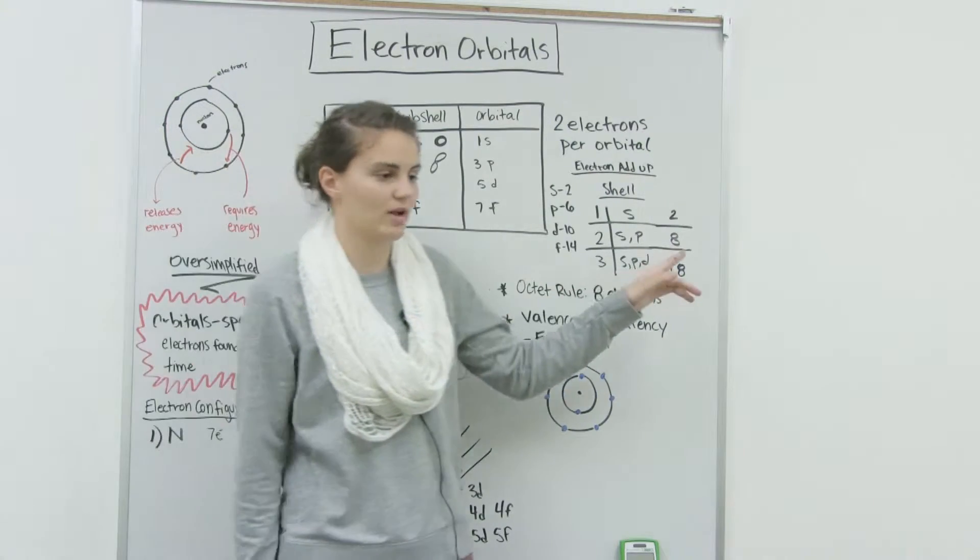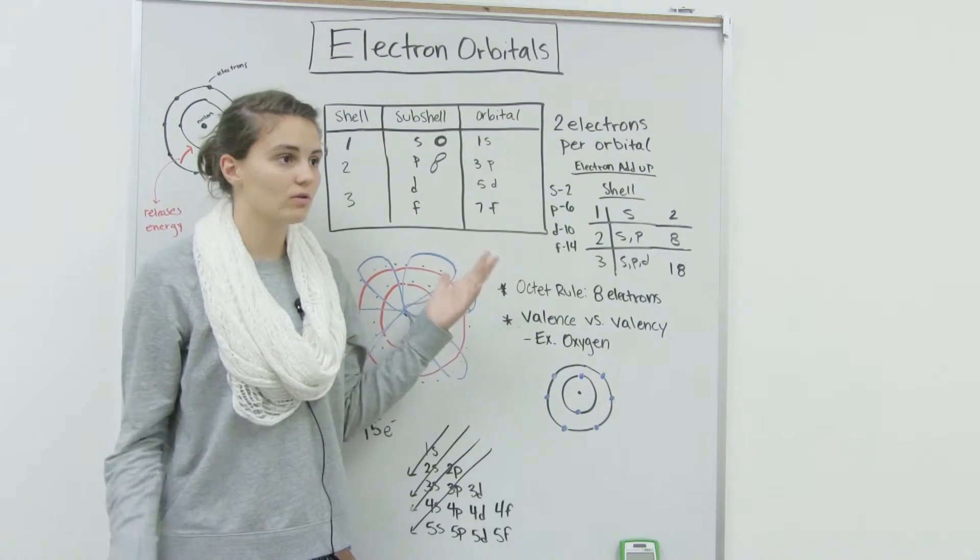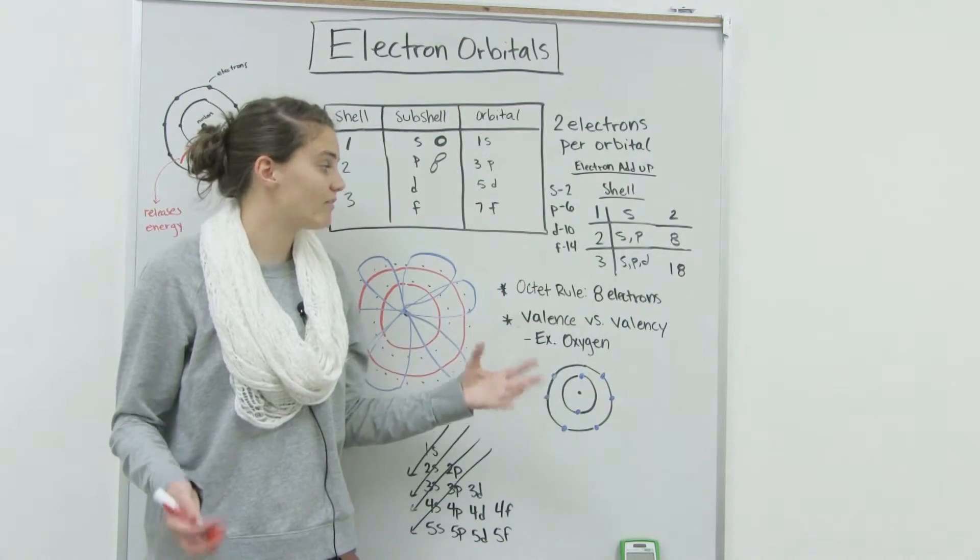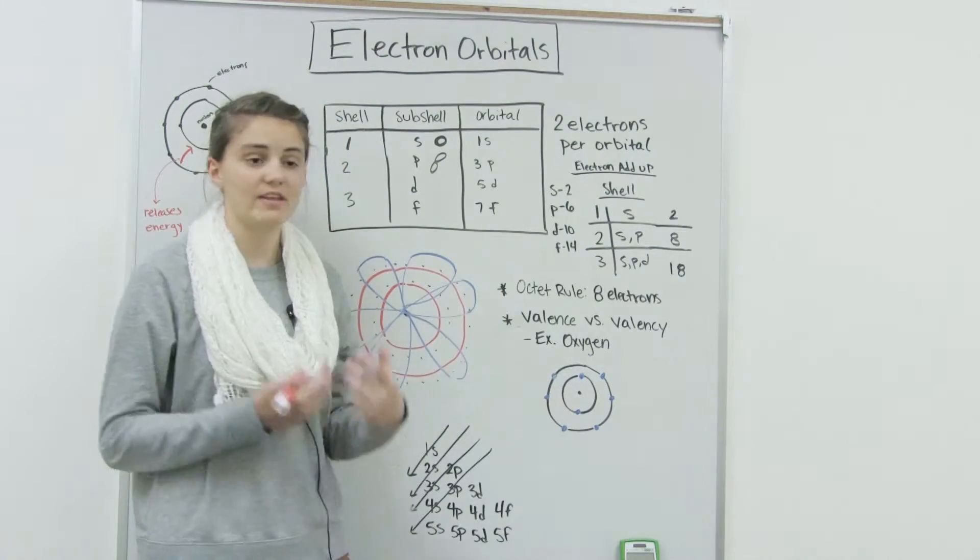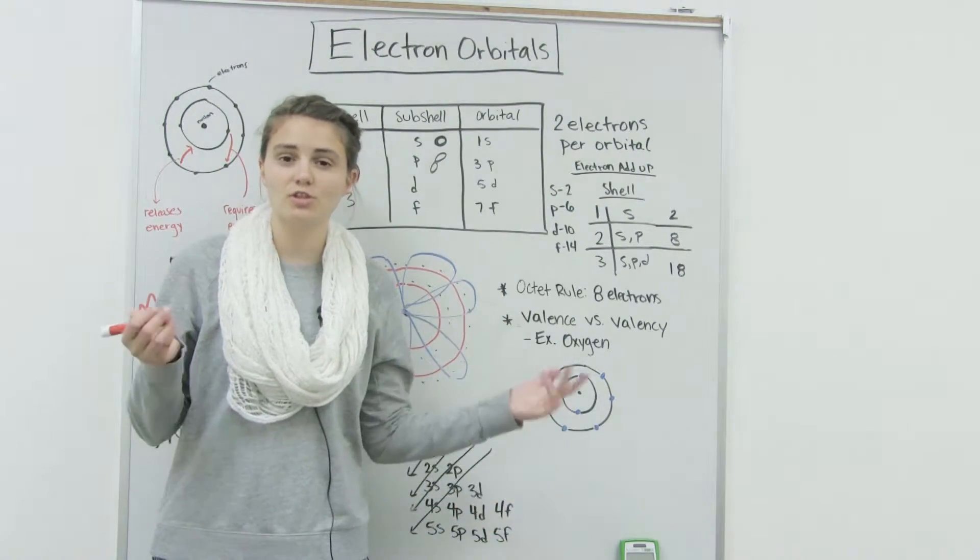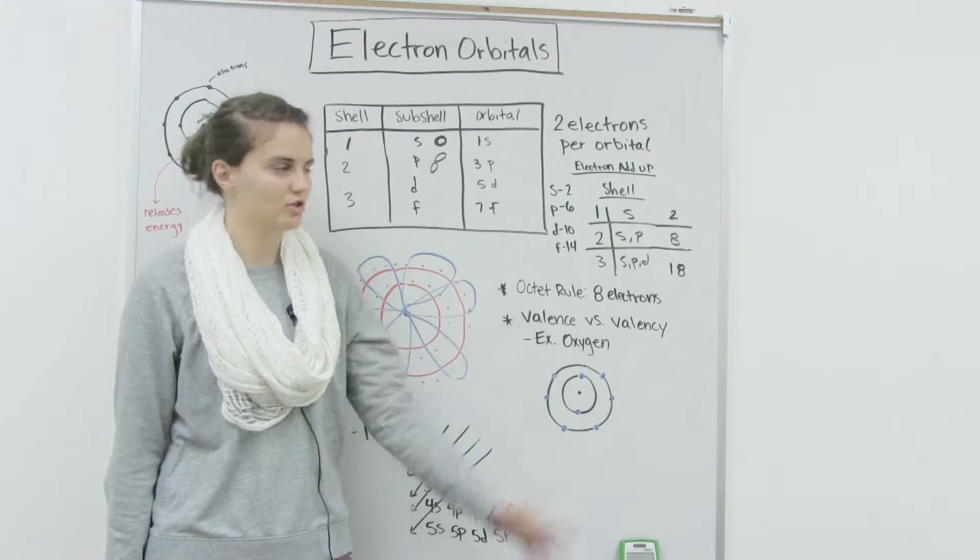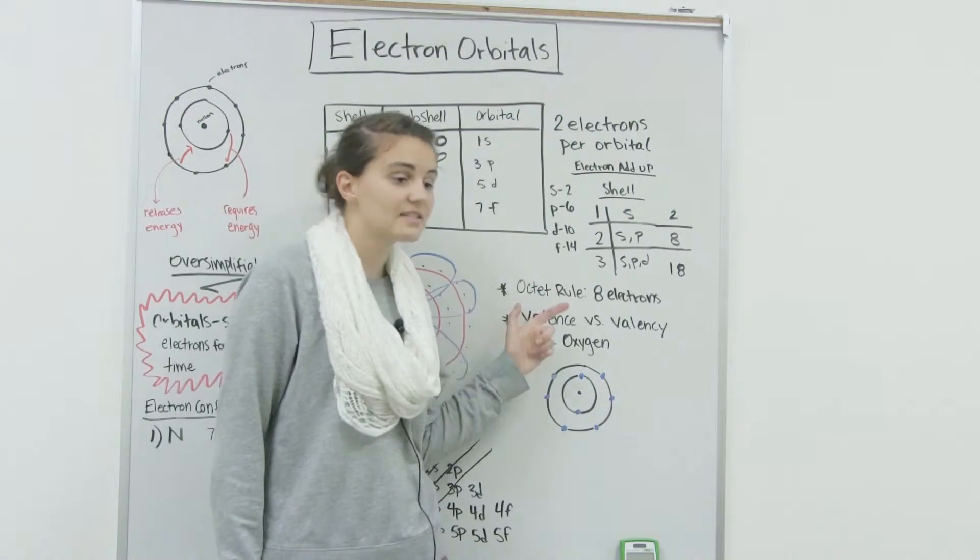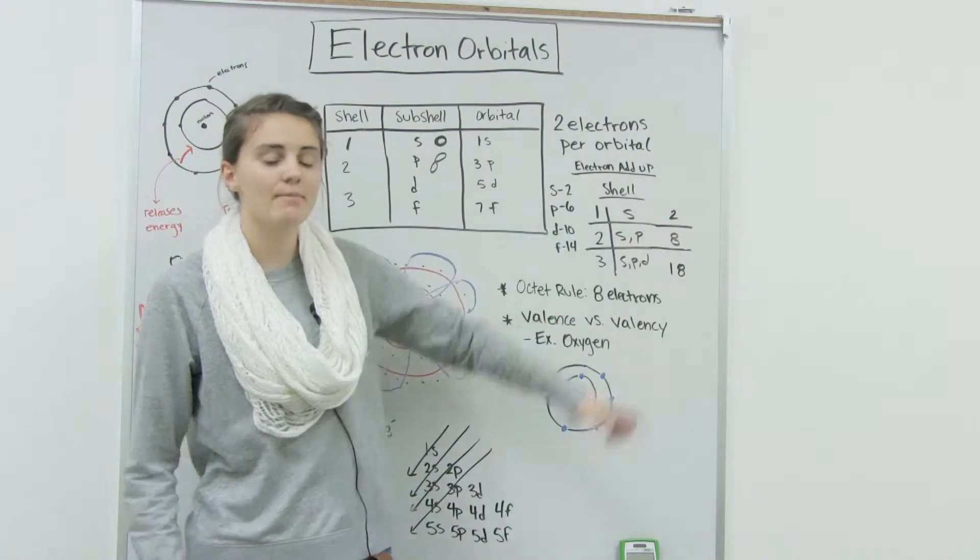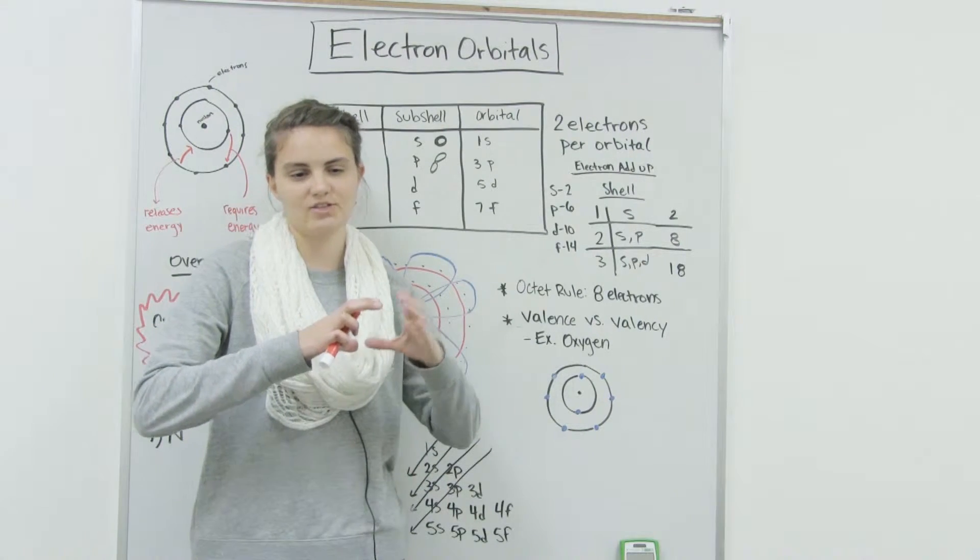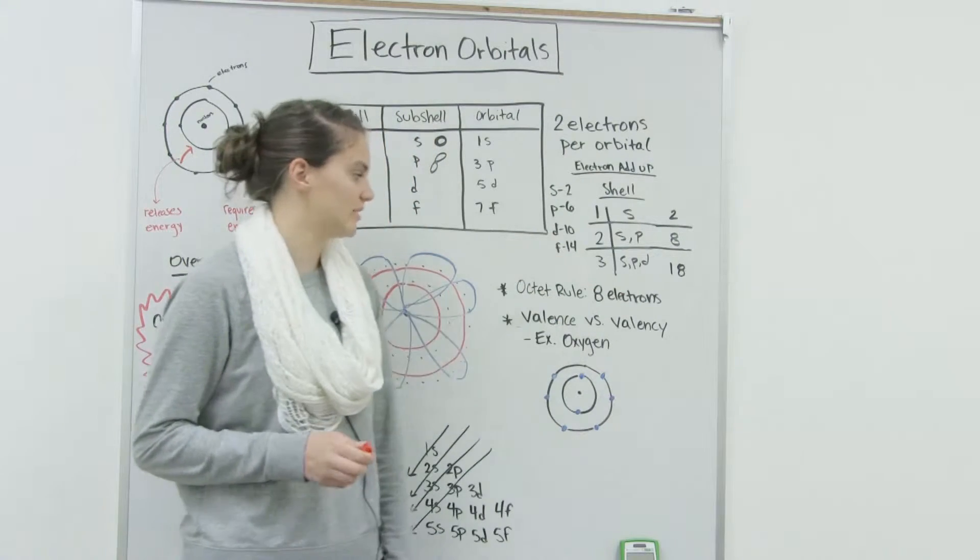So this is where the octet rule comes into play. The octet rule tells us that atoms or elements like to have full outer shells. They like to have eight electrons in their outer shell. And if they don't have eight electrons, they'll do about almost anything to get it. They'll bond in certain ways. And that's important when you talk about chemical bonding. Now this rule, there's an exception, two exceptions, and that's for hydrogen and helium because their outer shell only contains two electrons. So for everything but hydrogen and helium, they want eight electrons in their outer shell.